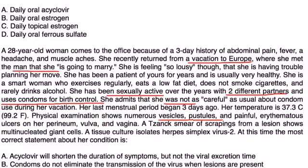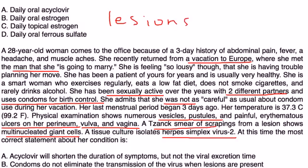Temperature is 37. Physical exam shows numerous vesicles, pustules, and painful erythematous ulcers on her perineum, vulva, and vagina. A Tzanck smear of scrapings from the lesion shows multinucleated giant cells. A tissue culture isolates herpes simplex virus 2. At this time, the most appropriate correct statement is: condoms do not eliminate the transmission of the virus when lesions are present. That is actually the correct statement because transmission by skin-to-skin contact can occur even when a condom is used. If the lesions are present, there can still be contact from person to person even with a condom. You can have skin-to-skin contact of the lesions.